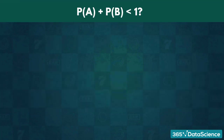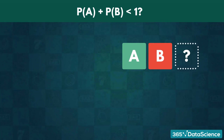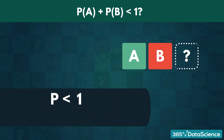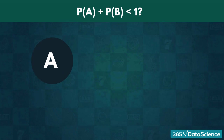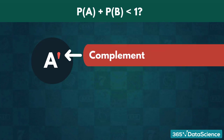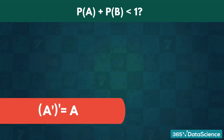Another peculiar case is if we end up with a sum of probabilities less than 1. Then, we have surely not accounted for one or several possible outcomes. Therefore, there must be some part of the sample space we have not yet accounted for. All events have complements, and we denote them by adding an apostrophe. For example, the complement of the event A is denoted as A'. It is also worth noting that the complement of a complement is the event itself, so A'' would equal A.